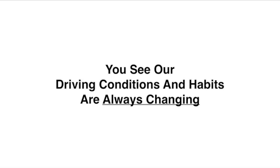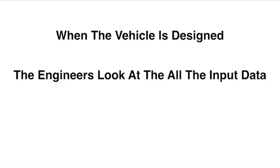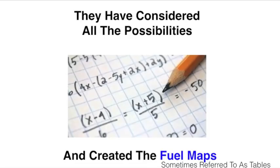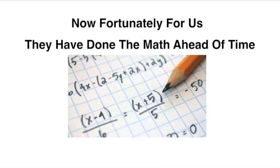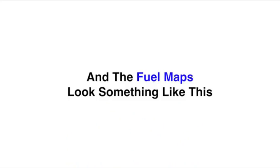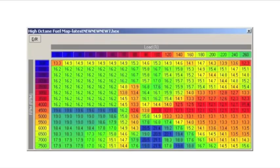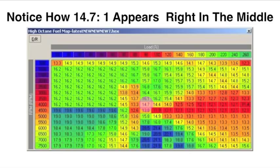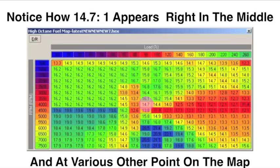Now this is achieved through fuel mapping. You see, our driving conditions and habits are always changing. When the vehicle is designed, the engineers look at all the input data. The mass airflow sensor, the O2, the TPS, the MAP, and the vehicle speed. Now, they've considered all the possibilities and created the fuel maps. Now, fortunately for us, they have done the math ahead of time. And the fuel maps look something like this. And the 14.7 to 1 appears right in the very middle. And again, that's our stoichiometric goal. And it also appears at various other points on the fuel map.